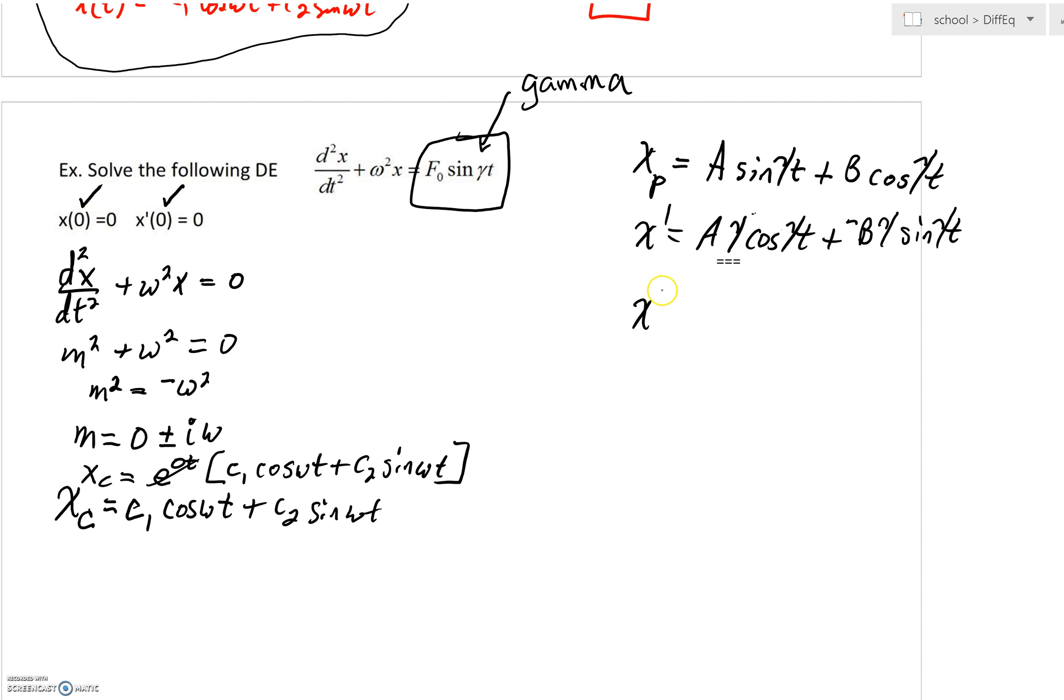As we're preparing this, we're going to take a second derivative here. As we do that, the derivative of cosine is negative sine. So we're going to have another factor of gamma come out.